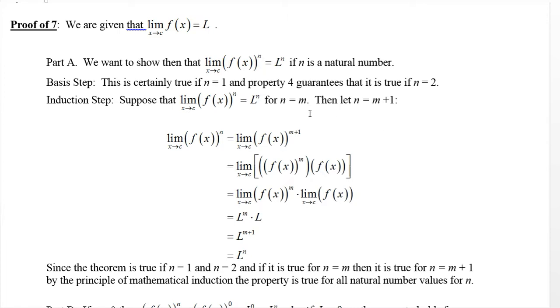So this is what we're going to have. We want to show that the limit as x approaches c of [f(x)]^n equals L^n if n is a natural number, where we're given that the limit as x approaches c of f(x) is L. Now the basis step is the getting on the ladder step. So you want to prove that this is true for the lowest number in your list. The lowest natural number is one.